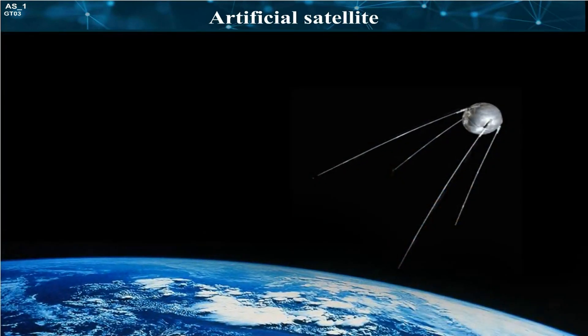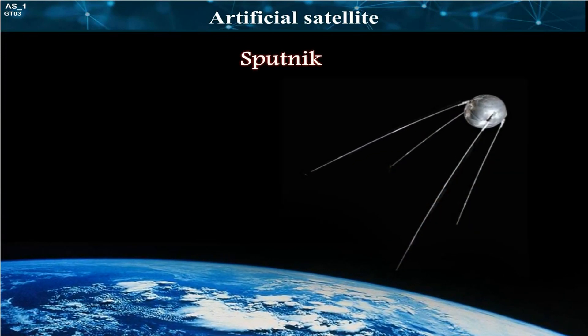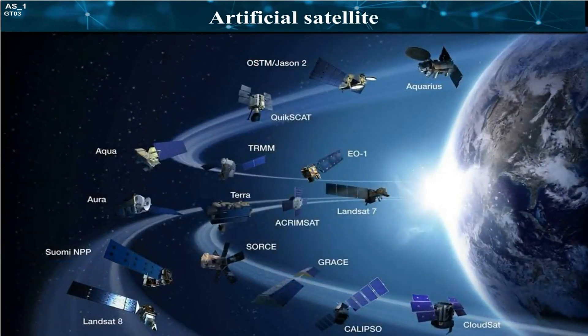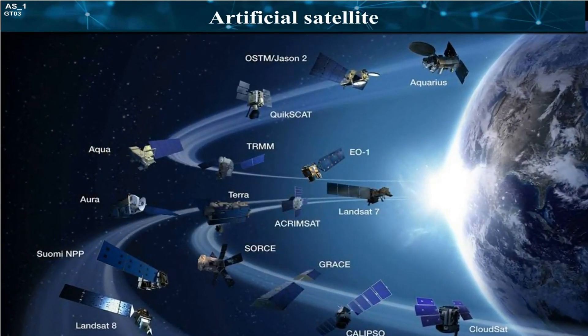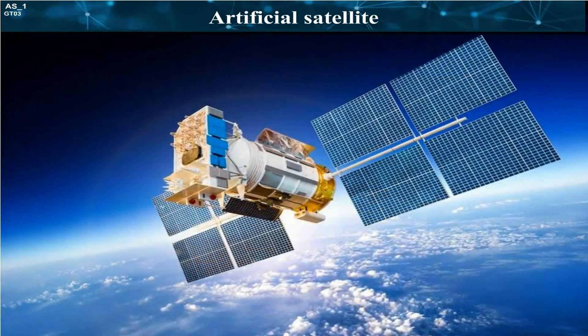The first artificial satellite, Sputnik, was sent to space by Soviet Union in 1957. Today, more than 1,000 satellites are orbiting the Earth. The satellites work on solar energy.